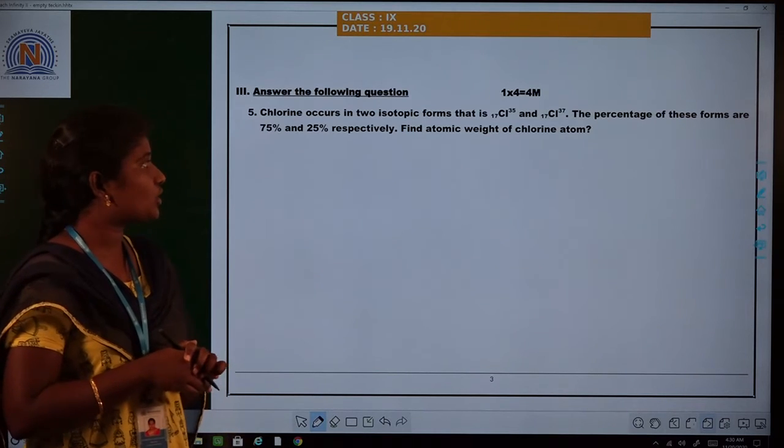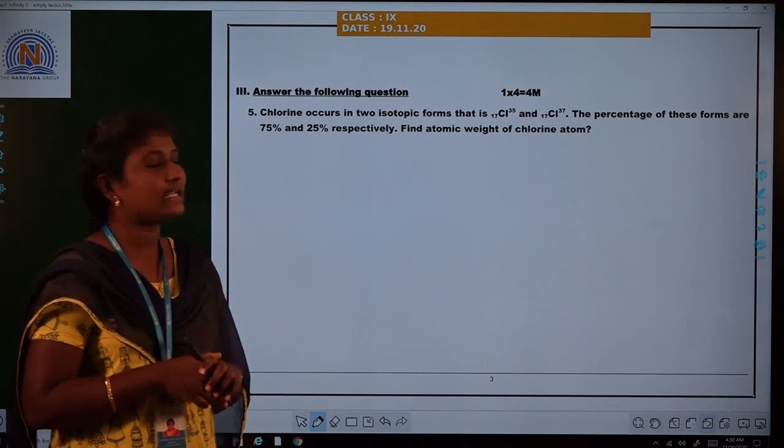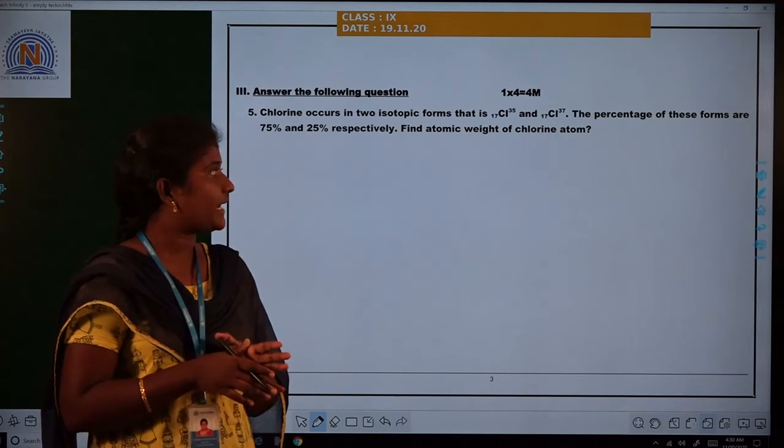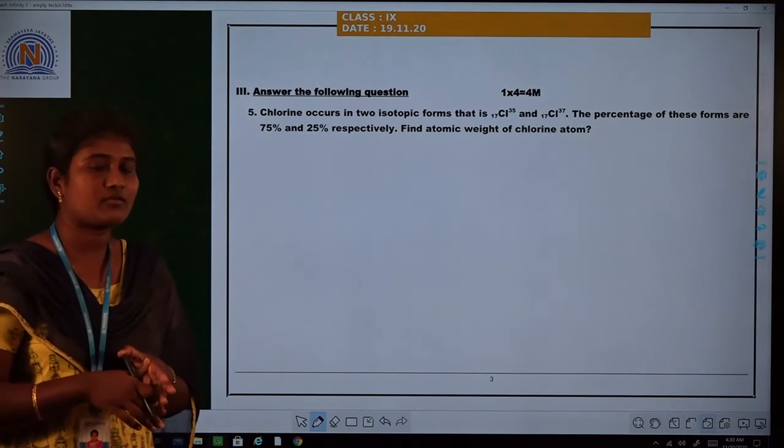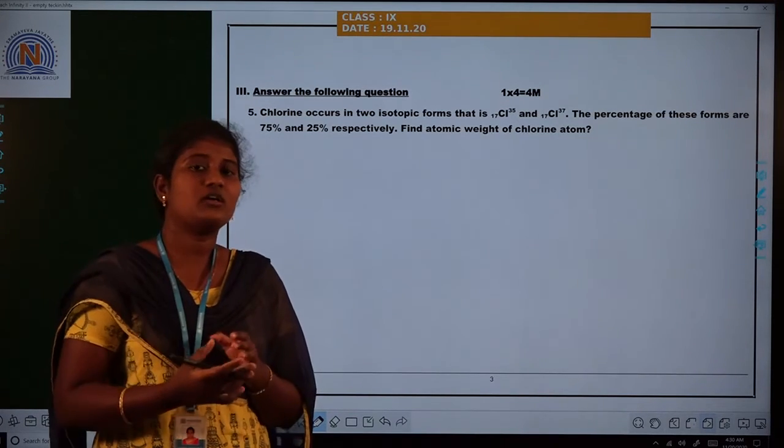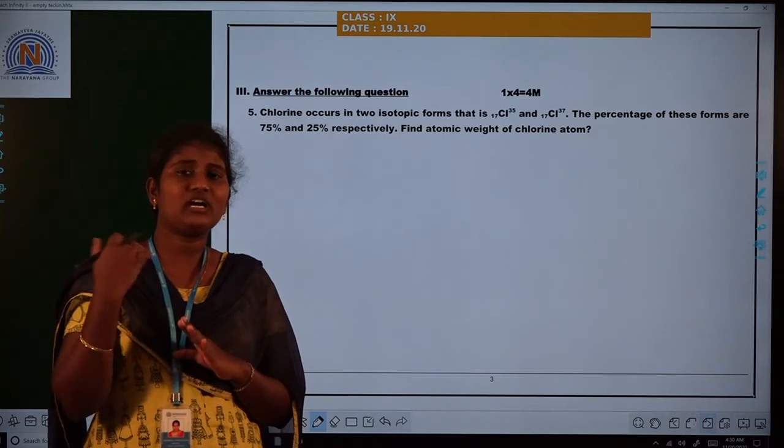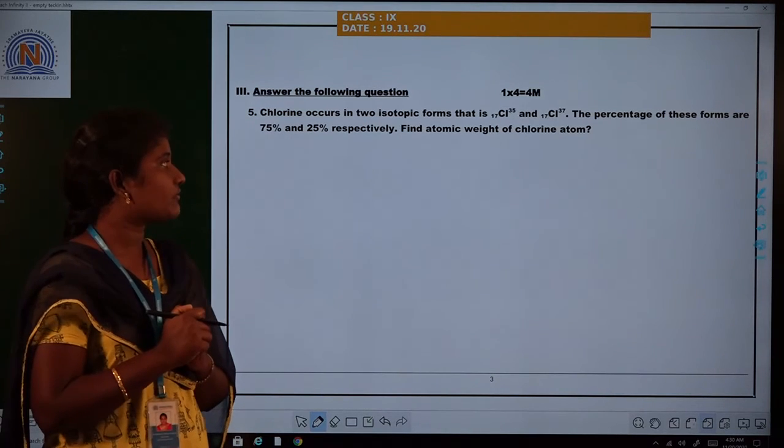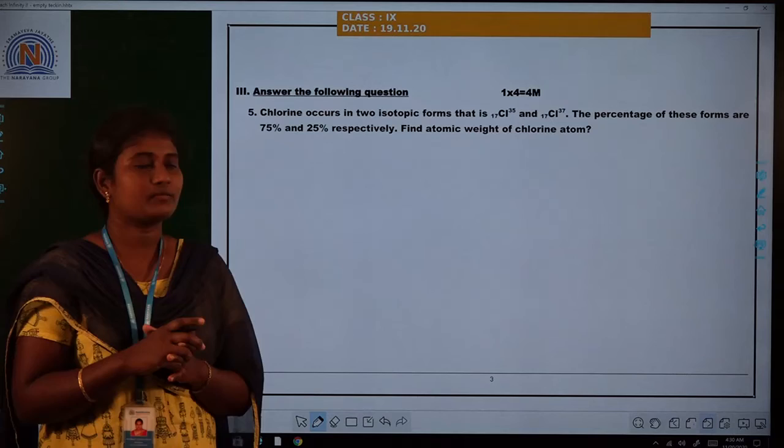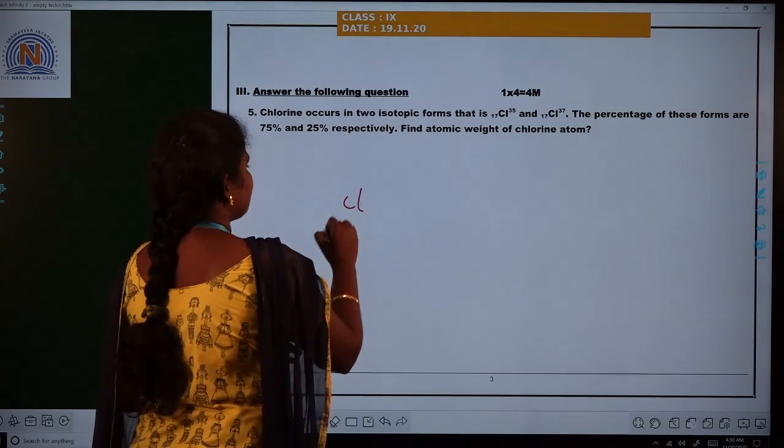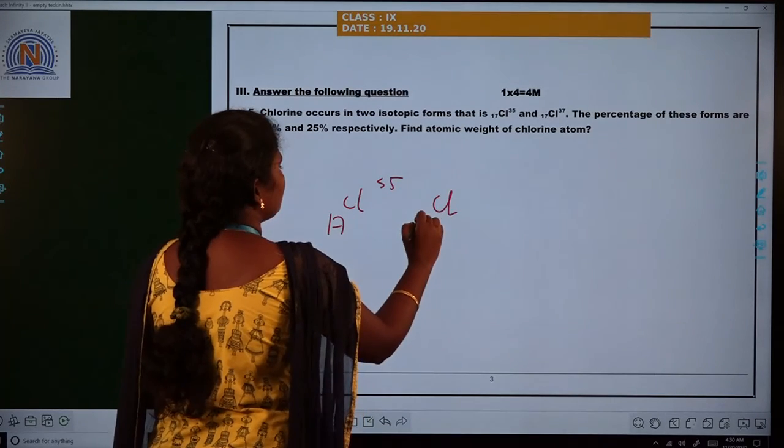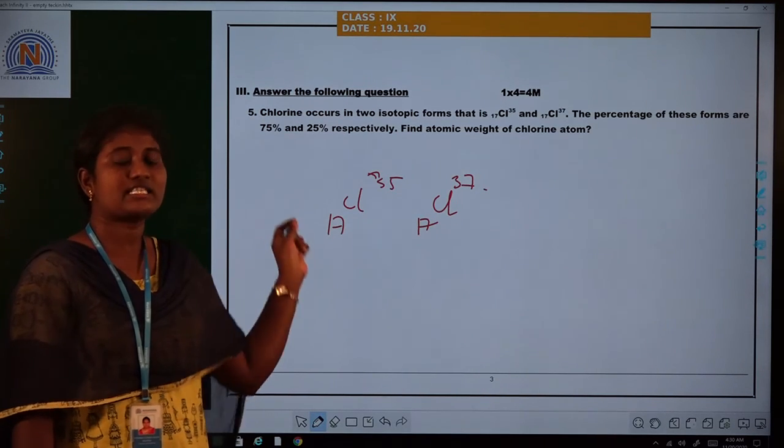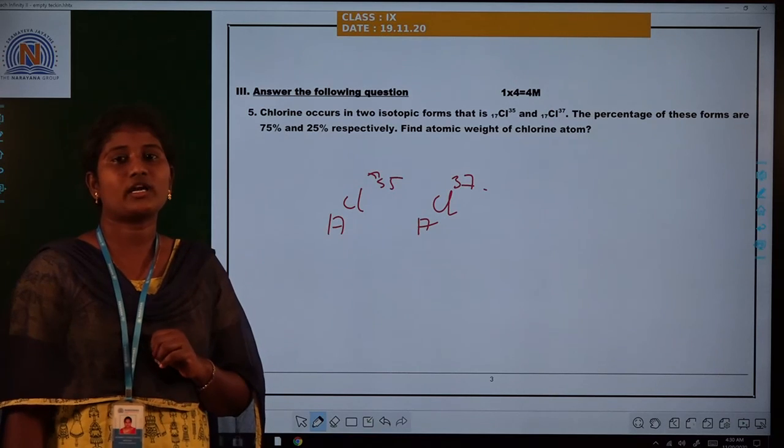Chlorine occurs in two isotope forms: Cl-35 and Cl-37. The percentages of these forms are 75% and 25% respectively. Find the atomic weight of chlorine. Generally, the atomic mass of an element is taken as the average atomic mass of naturally occurring isotopes. So for chlorine, the atomic weight is the average of Cl-35 and Cl-37. I hope you all understood. Thank you.